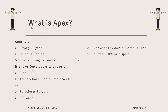With 'object-oriented' we mean that it follows object-oriented programming principles — the principles we discussed earlier about objects, classes, abstraction, encapsulation, polymorphism, and inheritance. All those object-oriented principles are supported by Apex, hence it's an object-oriented language.